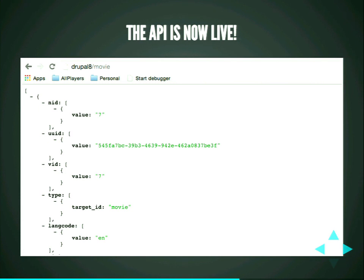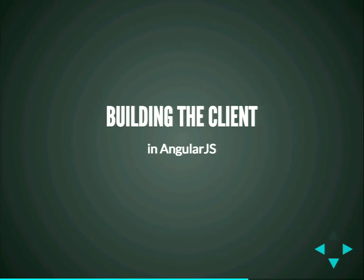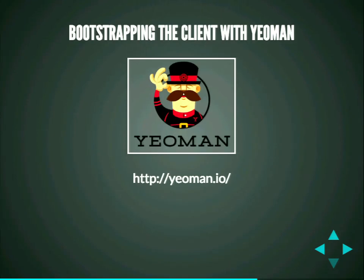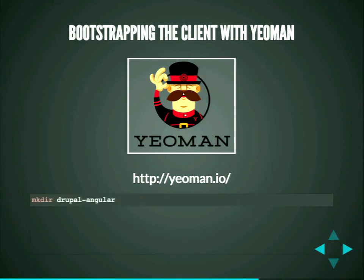Now that we have an API, let's build the AngularJS client. I highly recommend using Yeoman scaffolding — this tool will quickly bootstrap your AngularJS application. Make a directory for your Drupal app — keep in mind this is not your Drupal directory. The app is completely separate — you're not in the theme folder. This is just locally on your machine.